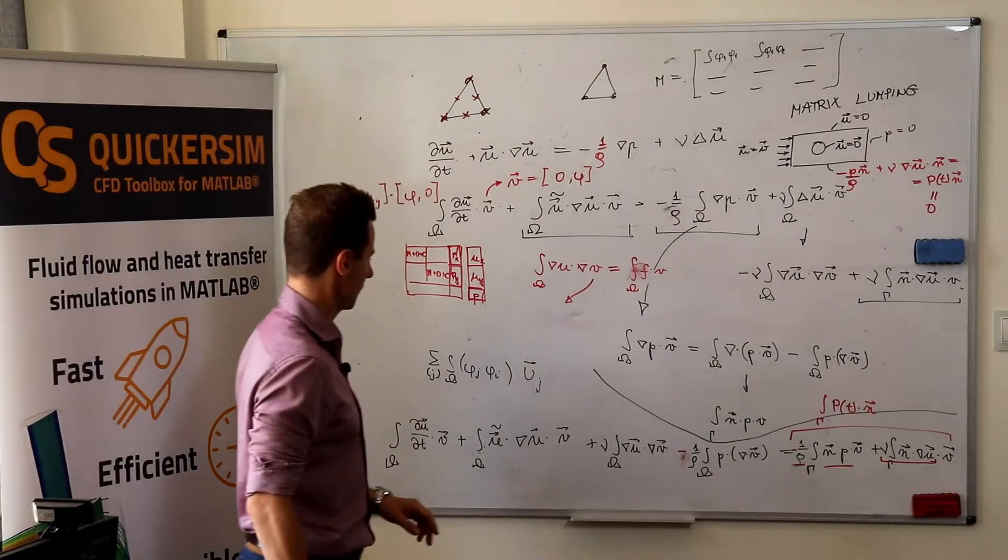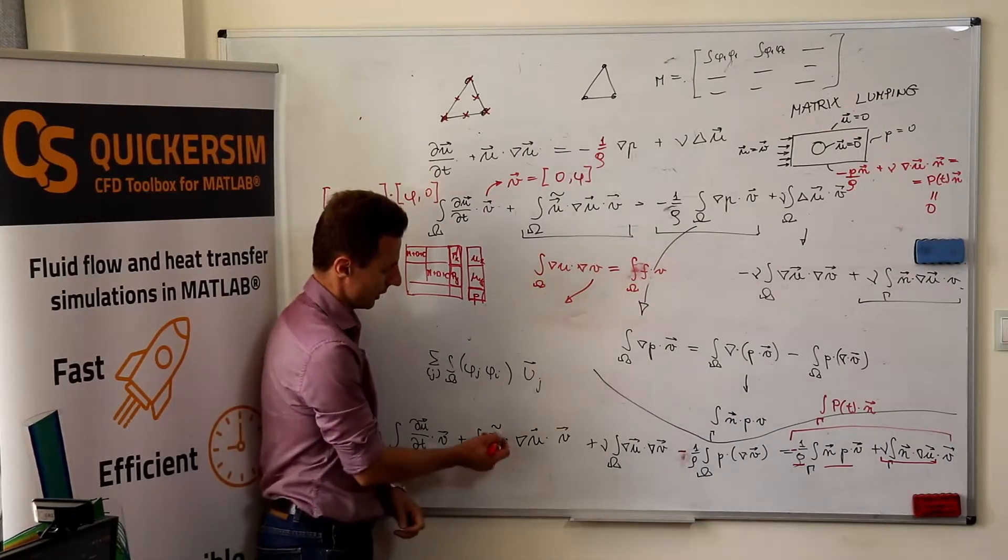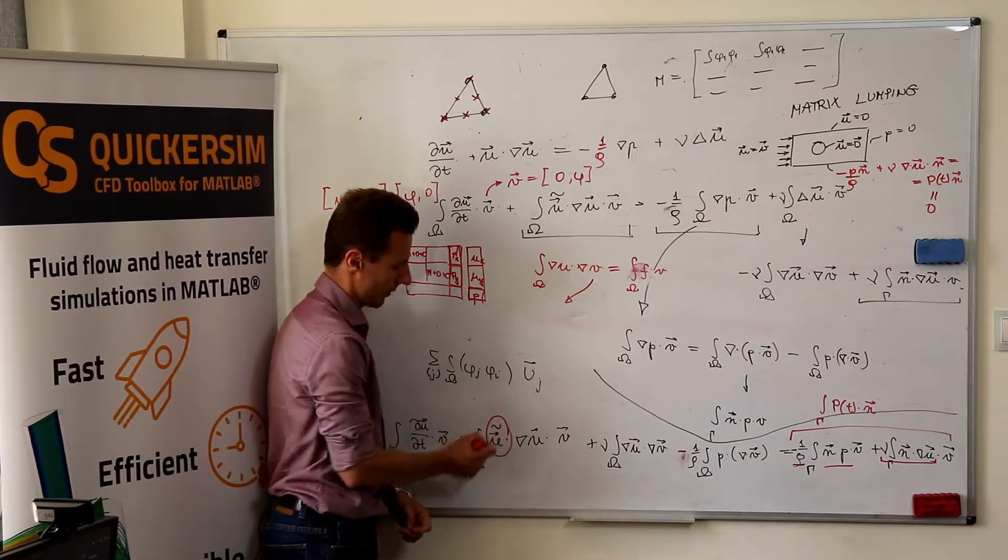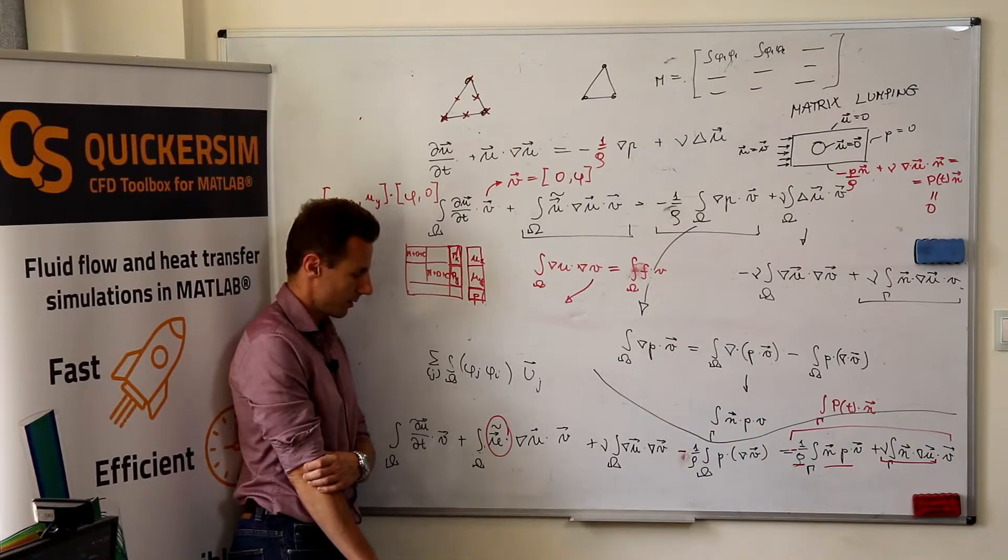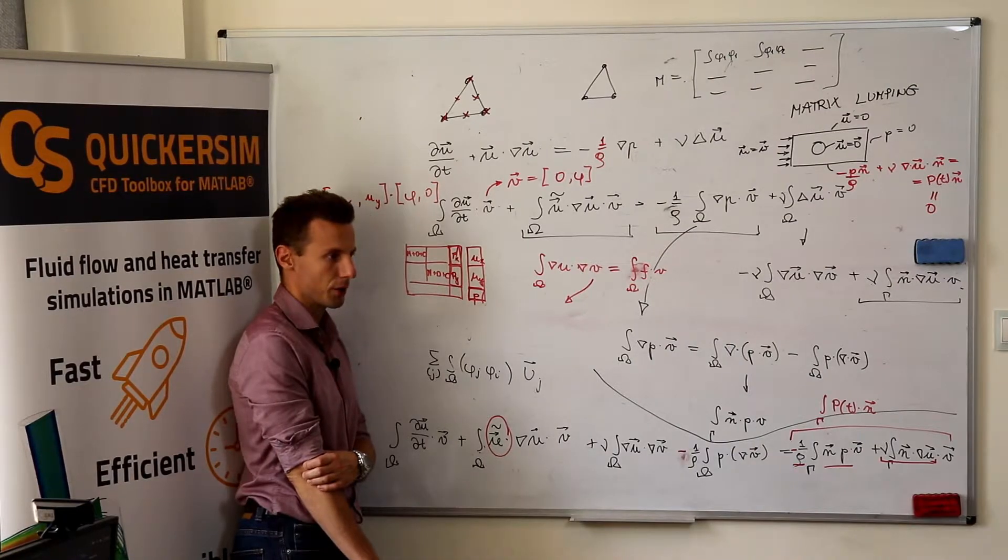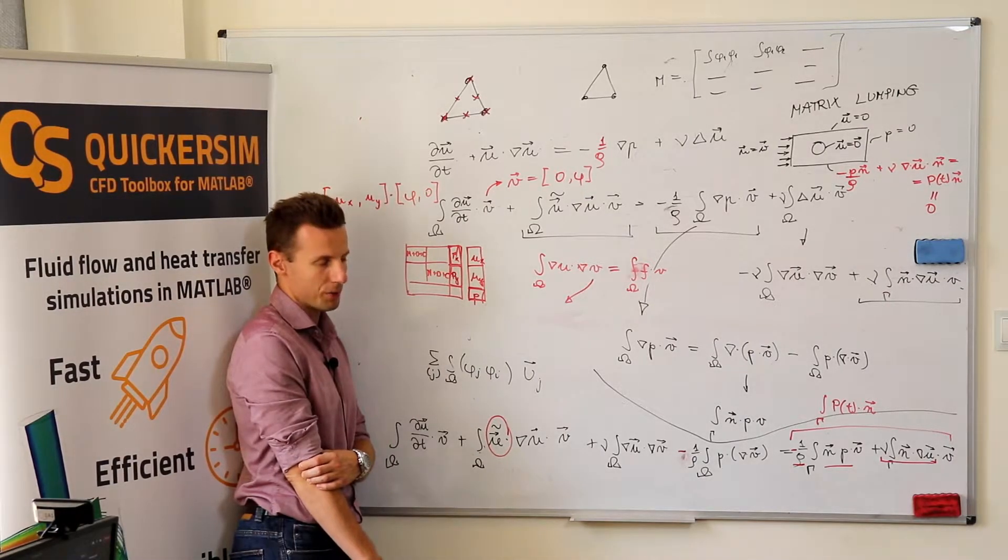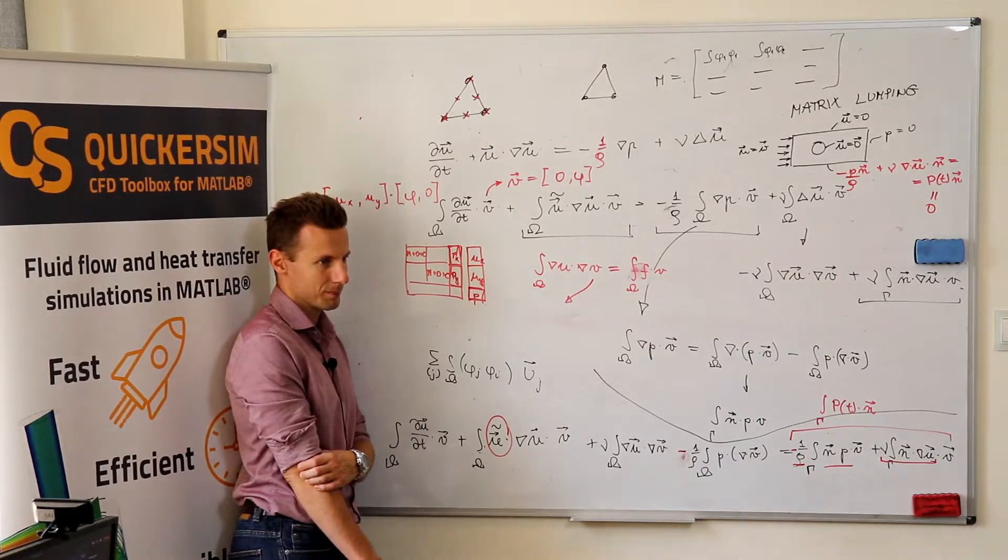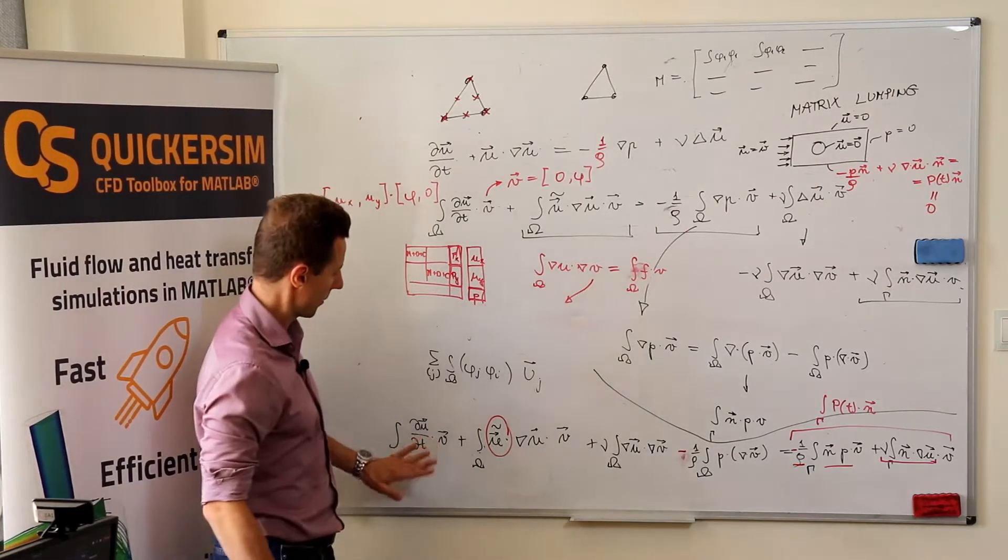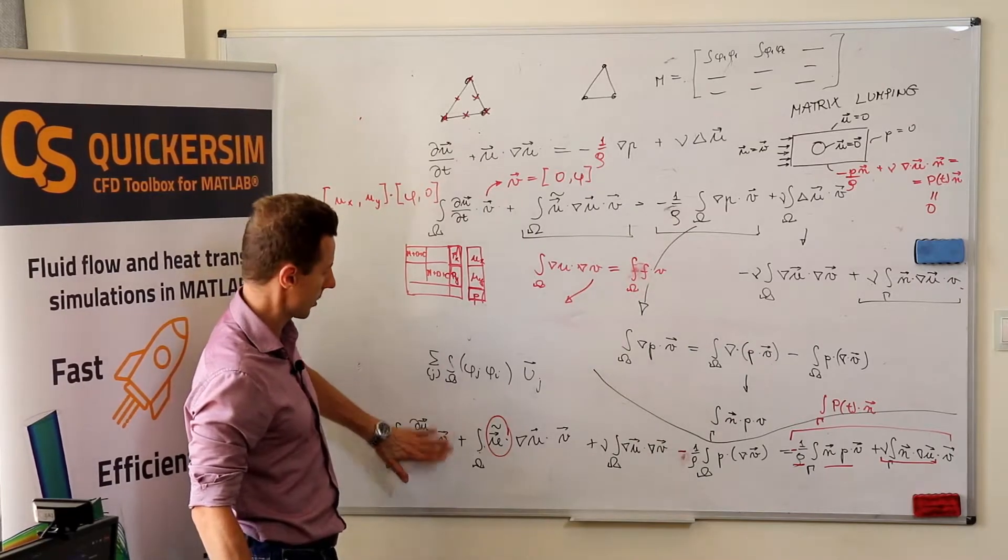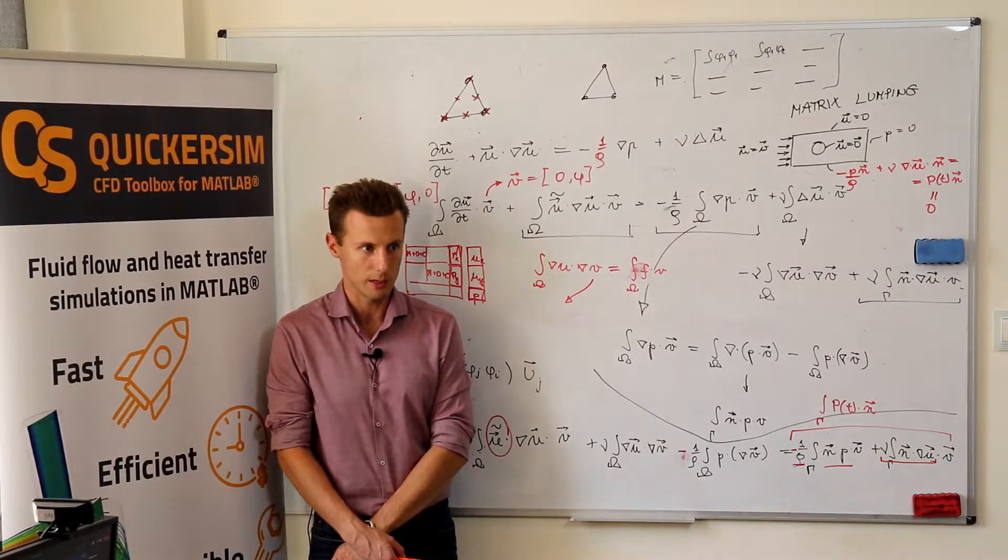What else can you do if you're solving the Navier-Stokes equation? What else can you do with this velocity that you don't know? Let's assume for a moment that we don't have this, so we are solving a steady state problem. How would you proceed?